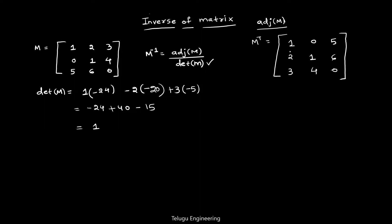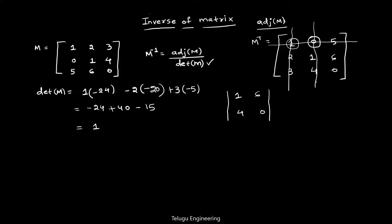In the same way we found the determinant using minor matrices, we do the same here for each element. For element 1, cut out its column and row — the remaining four elements are 1, 6, 4, 0. For element 0, cut its column and row — the remaining elements are 2, 6, 3, 0.